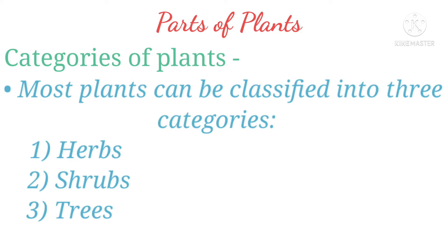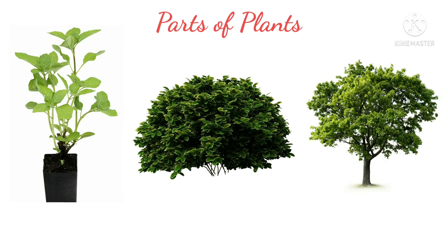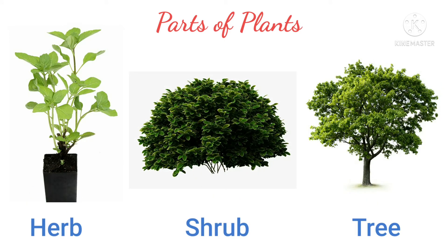Categories of plants: most plants can be classified into three categories — herbs, shrubs, and trees. This is the picture of herb, shrub, and tree.